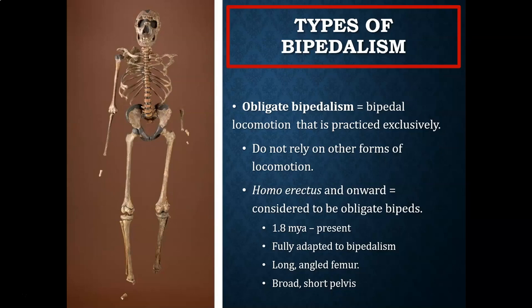With Homo erectus, we're going to see that they are fully adapted to bipedal locomotion. Their femurs are long and angled inward towards the knee. There's going to be a feature on the back called the linea aspera that allows for the attachment of ligaments and muscles important for bipedal locomotion — both walking and running. Also, the pelvis is going to be overall short and broad, and the pelvic inlet, essentially the birth canal for female hominins, is going to be more narrow, which made childbirth more dangerous and complicated — one of those evolutionary trade-offs of bipedal locomotion.